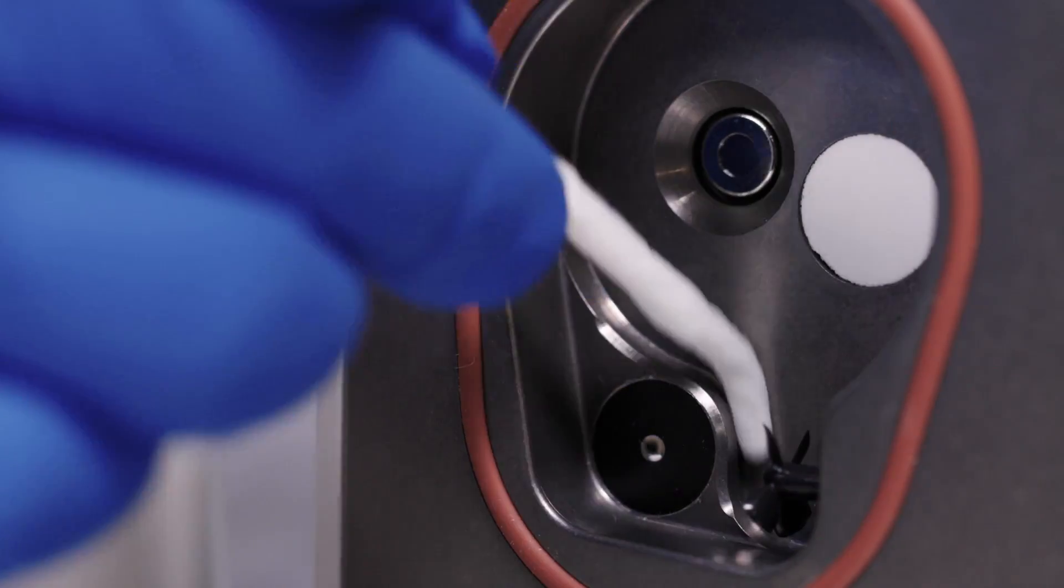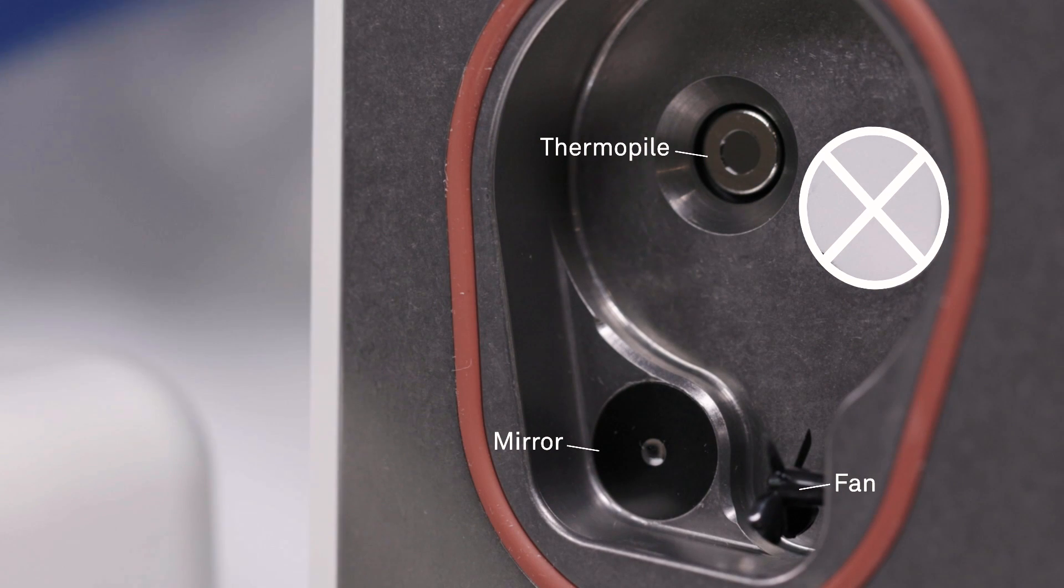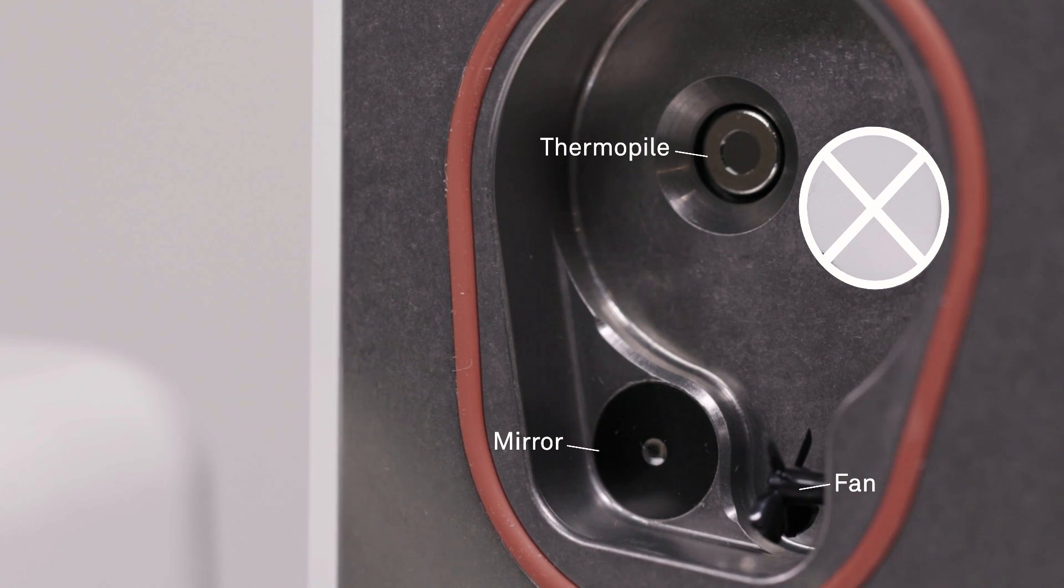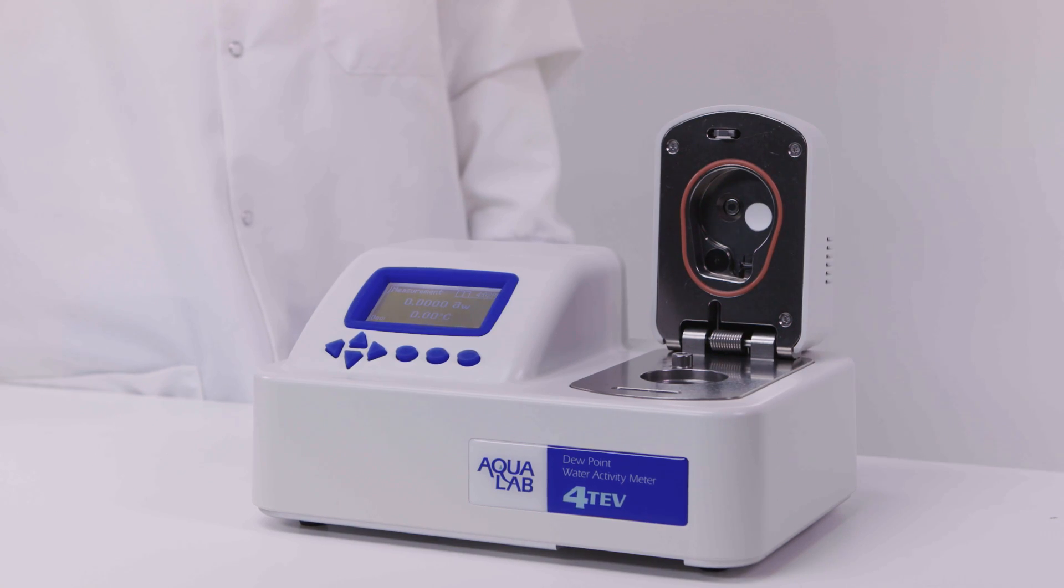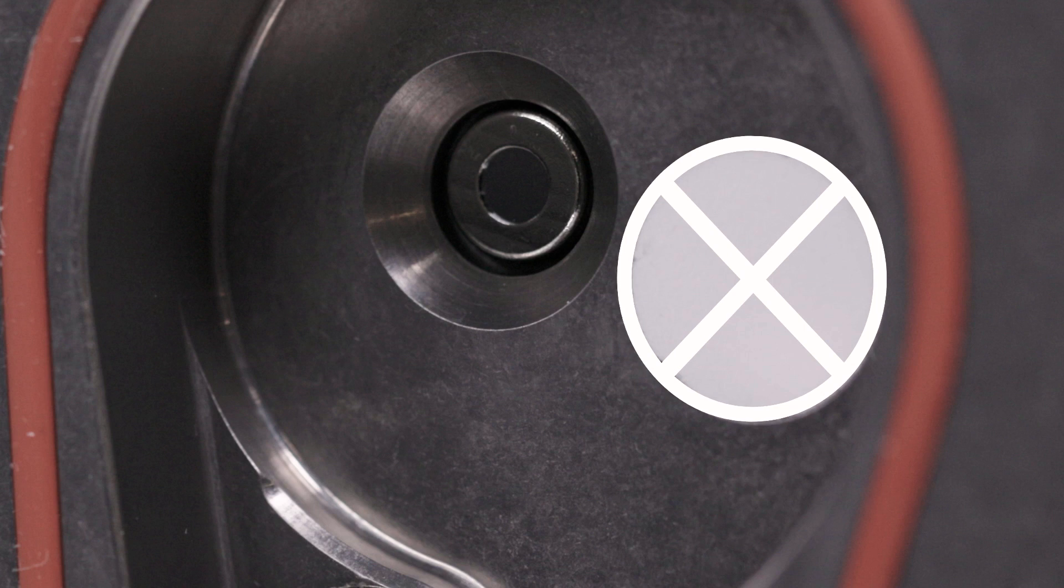There are three sensors to be cleaned. The thermopile, the mirror, and the optical sensor. If you have the Aqualab 4TEV, vapor sorption analyzer, pocket, or light, do not allow any moisture to come into contact with the filter shown here. Always get a fresh kimwipe before cleaning each sensor.